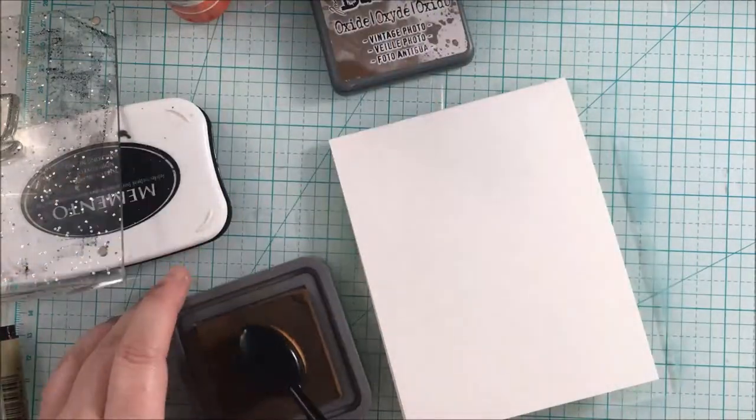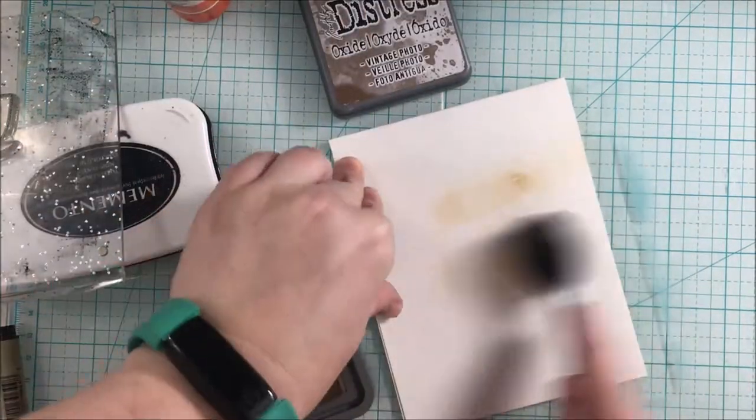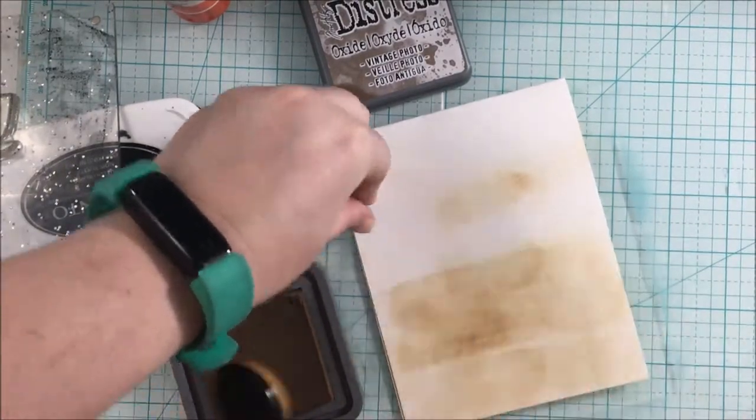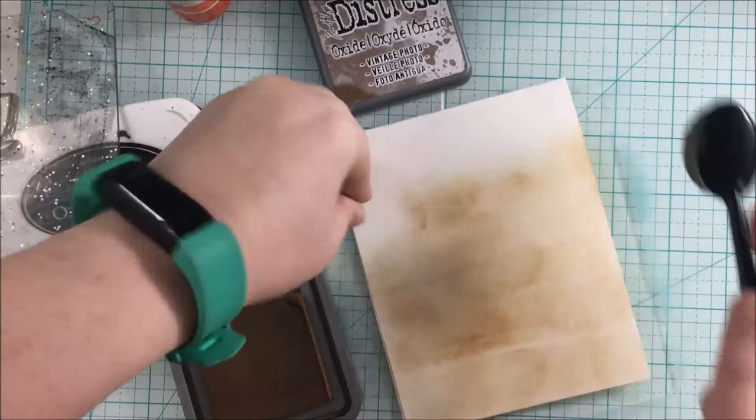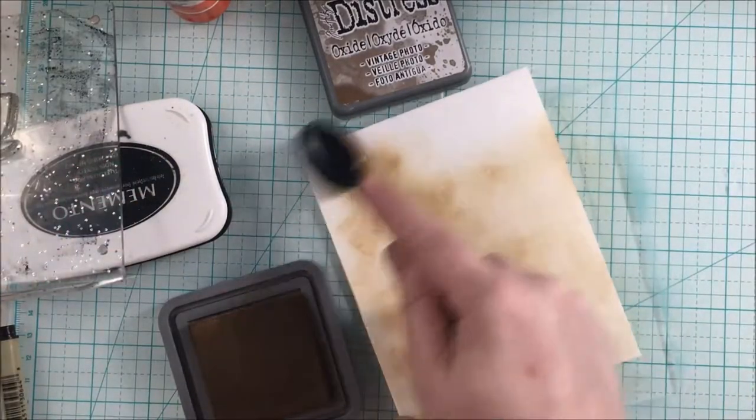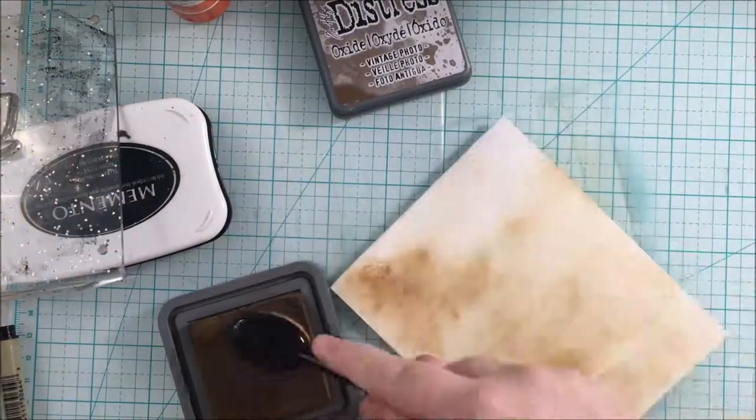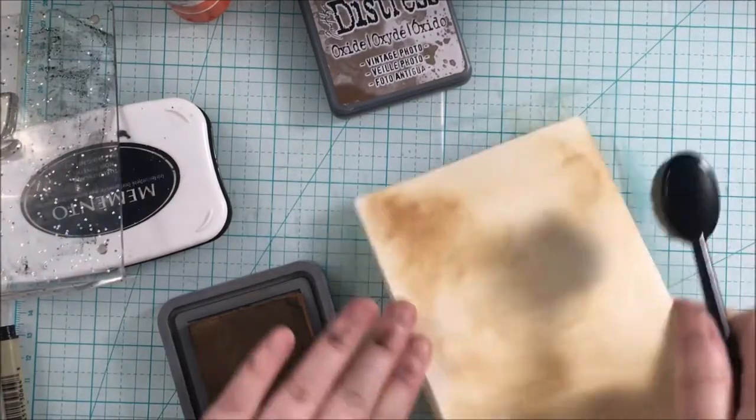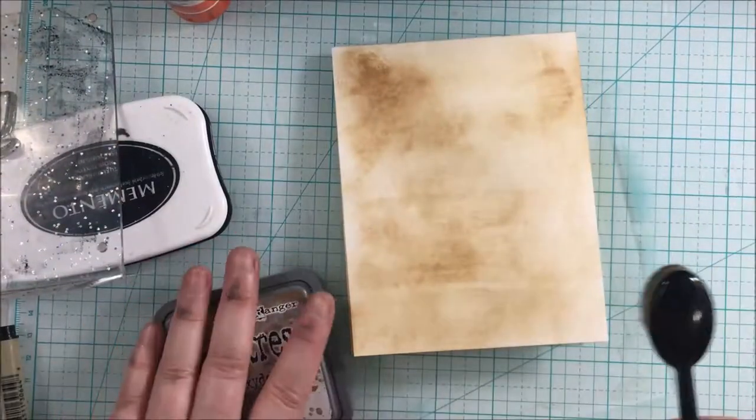I inked it up and before I stamp it I grabbed the Vintage Photo again and then to quickly just have a background here because I was going to be using dark colors for the coffee cup. I was going to just color over the ink that I'd applied.